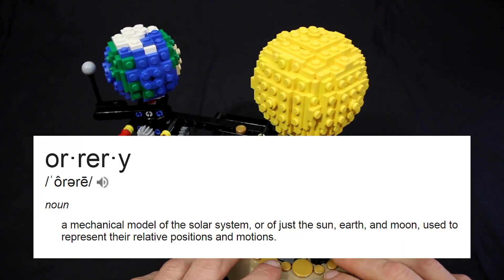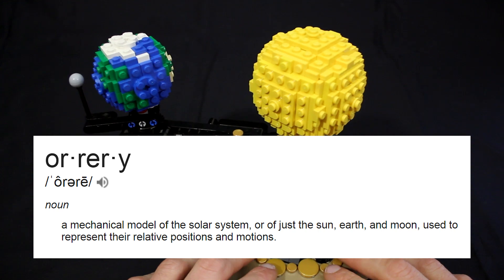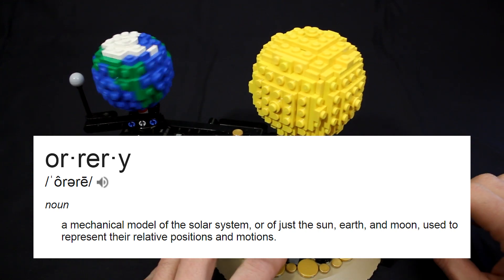Now if you don't know what an orrery is, it's just a fancy word for a mechanical model of the solar system, or part of the solar system.